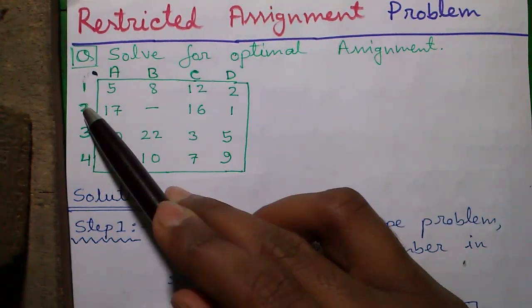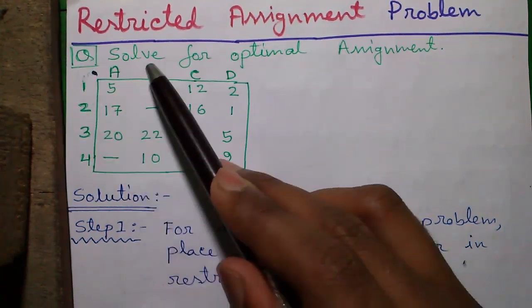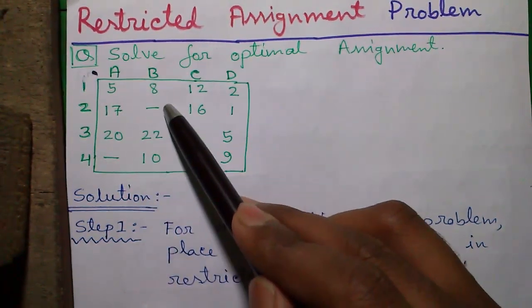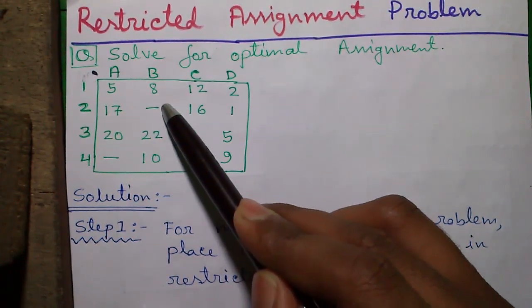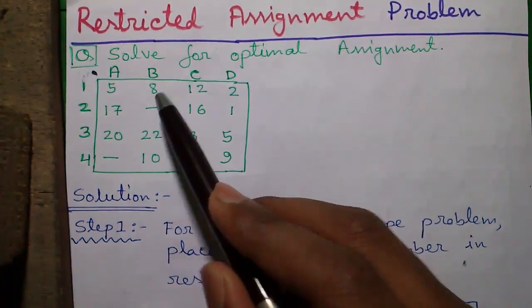Next here is a clause. We can't assign machine 2 to person B. There is a dash symbol that means this assignment is restricted. So how to solve it? I will tell you.